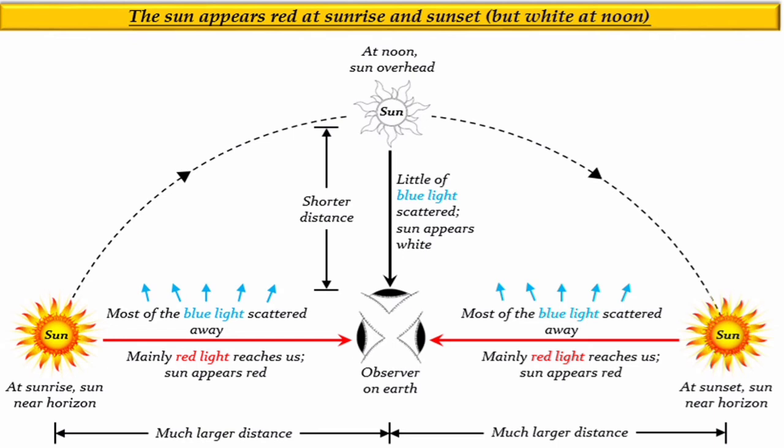However at noon, when the sun is overhead, light from the sun travels relatively shorter distance. As a result, only a little of the blue and violet colors are scattered and the sun appears white.